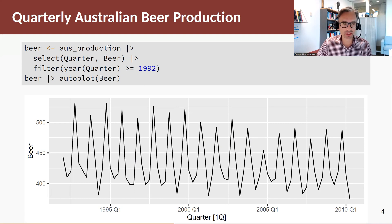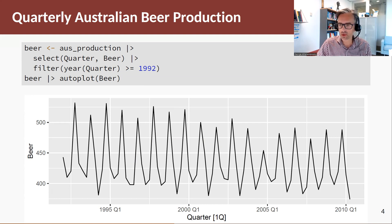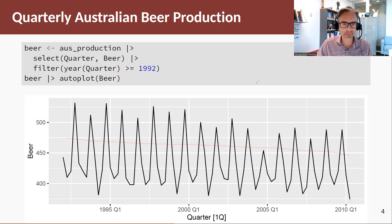Let's look at the beer data — the Australian production series from 1992 onwards. We looked at this before and noted strong quarterly seasonality with a spike at Q4, and we also contemplated that there is a long-term negative trend.